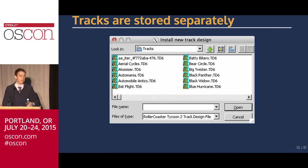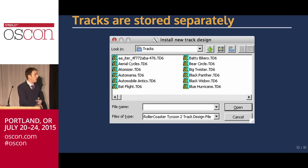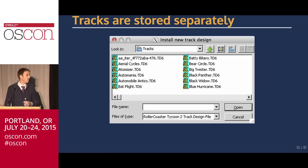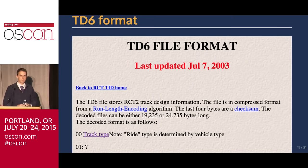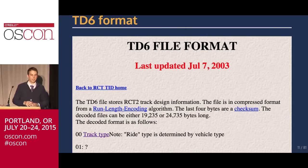The one nice thing is RollerCoaster Tycoon saves tracks separately and gives you an option to save them in the TD6 format. This is me running Wine on my Mac because it's a PC game. It's funny — you look at the last modified times on all these files and it's like 1999. Really old files. So I asked: what is a TD6 file? A guy named James Hughes did some of the original reverse engineering and published a website — last updated July 7, 2003 — documenting the TD6 file format.